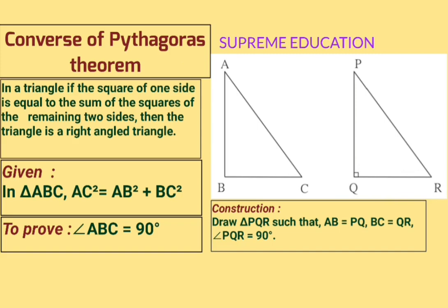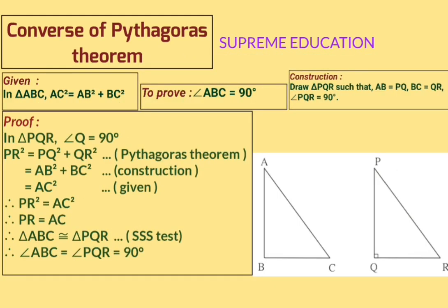Proof: In triangle PQR, angle Q = 90°, hence triangle PQR is a right angle triangle. Since triangle PQR is a right angle triangle, we can apply Pythagoras theorem: PR² = PQ² + QR².